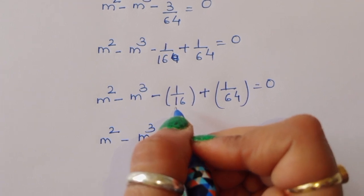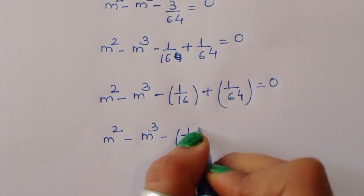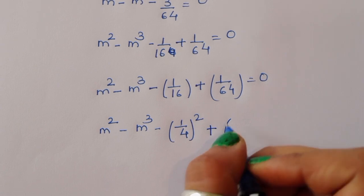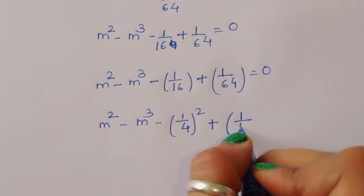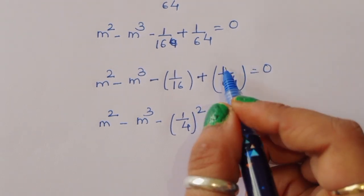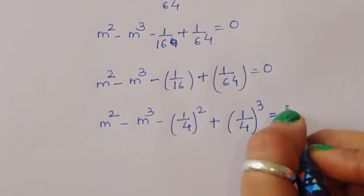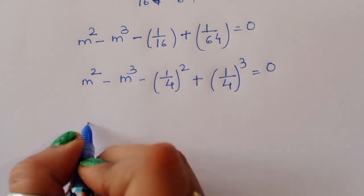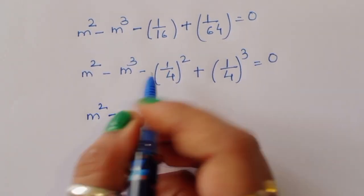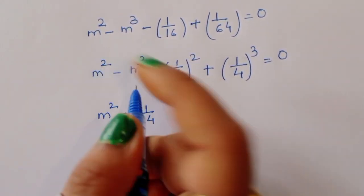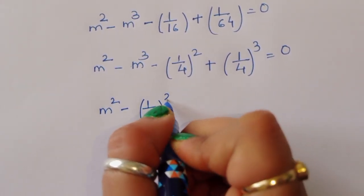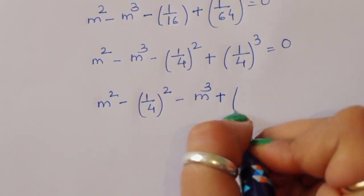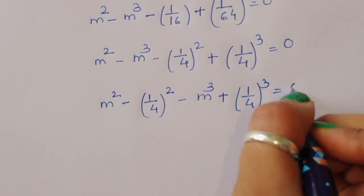Now 1 upon 16 we can write as 1 upon 4 squared — 1 squared is 1 and 4 squared is 16 — and 1 upon 64 we can write as 1 upon 4 cubed — 1 cubed is 1 and 4 cubed is 64. So we rearrange: m squared minus 1 upon 4 squared, minus m cubed plus 1 upon 4 cubed, is equal to 0.